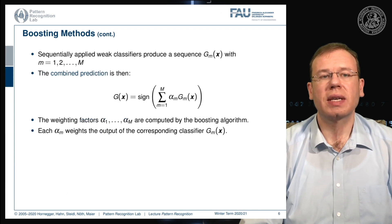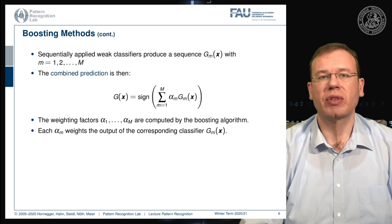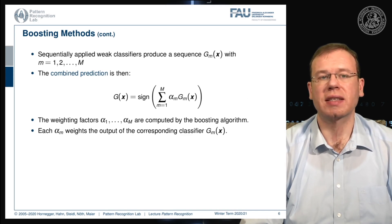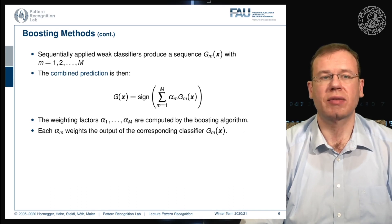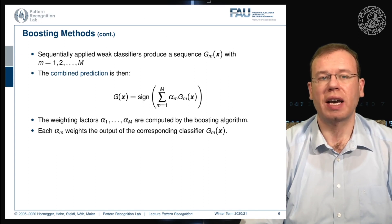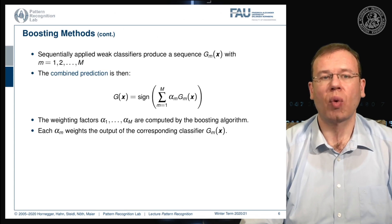We can sequentially apply the weak classifiers to produce a sequence g_m of different weak classifiers. You can then combine the weak classifiers in a sum, and the final classification for g of x is given as the sign over the weighted sum of the individual classifiers. We need weighting factors alpha — alpha one to alpha m — computed by the boosting algorithm, where each alpha weighs the output of the corresponding classifier.